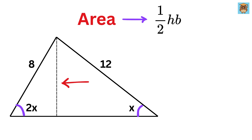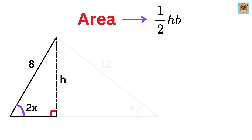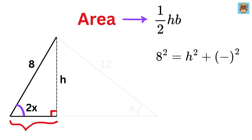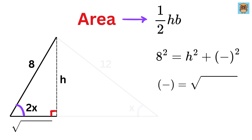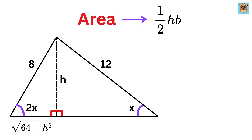Let us label the height of this triangle as h. Using Pythagoras' theorem on this right-angle triangle, we get 8 squared equals h squared plus the length of this piece squared. So the length of this piece will be equal to the square root of 64 minus h squared.